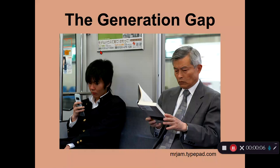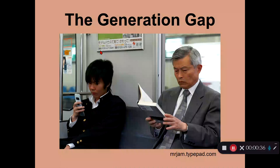Welcome back to MCB 170 Society and the Brain. This is lecture 24, which corresponds to part one of module 12. The title of module 12 is The Aging Brain. In module 12, we're discussing the neurobiological, psychological, and sociological aspects of aging, dementia, neurodegeneration, and death. In part one, we focused on neurobiological aspects. In part two, we'll shift to the psychological and sociological aspects of aging.